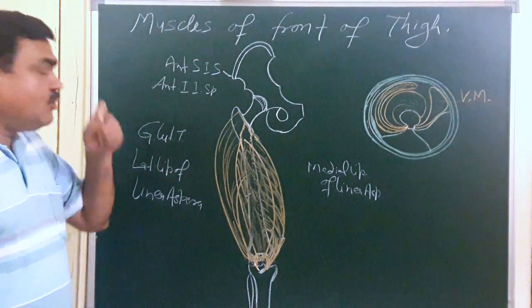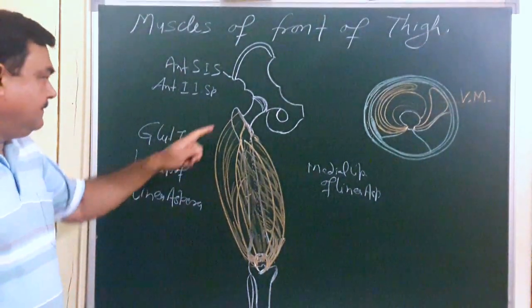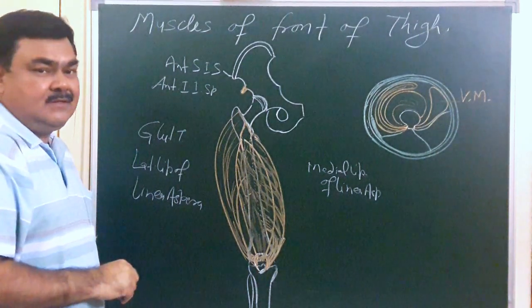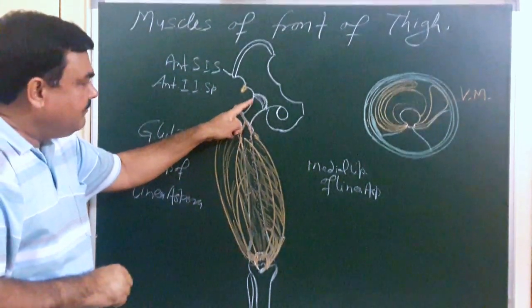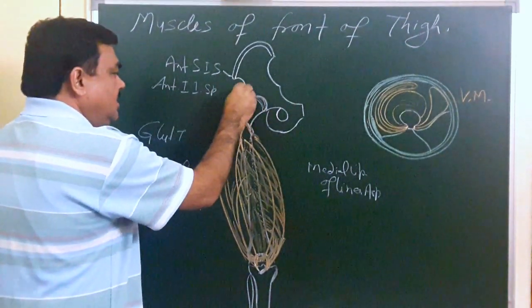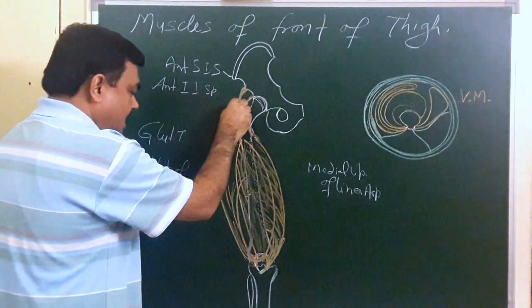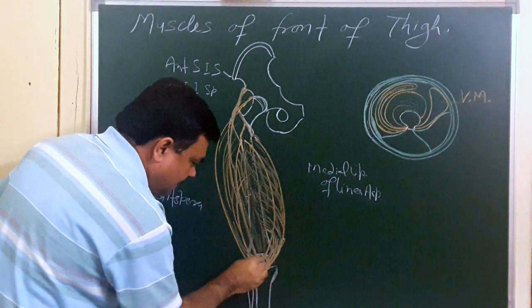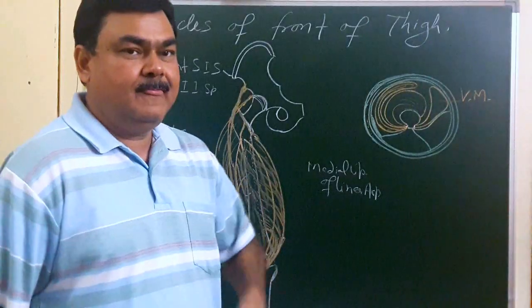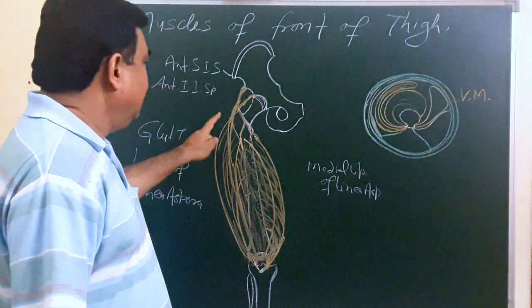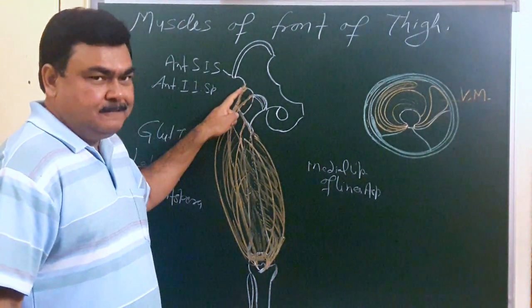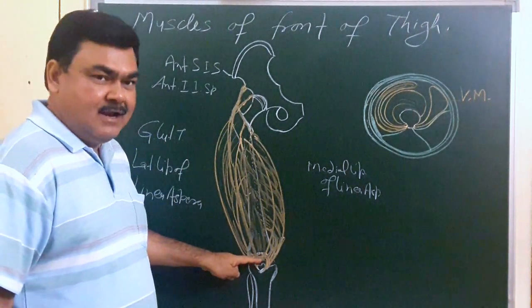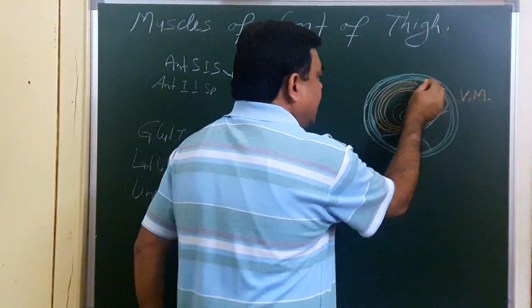The next muscle is rectus femoris. Rectus femoris takes origin from two heads — a straight head and a reflected head. The straight head takes origin from the anterior inferior iliac spine. The reflected head takes origin from a groove just above the hip joint. These two heads join and are inserted on the base of the patella. This is the position of the rectus femoris.